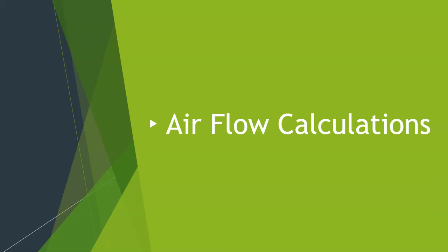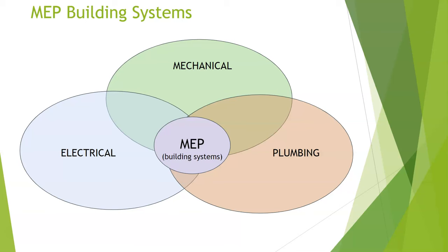In this video, we're going to discuss airflow calculations with regard to mechanical systems. Before we get into that, I want to explain what I mean by mechanical systems. With mechanical systems, I mean the ones found in building systems. Within building systems, there are three main disciplines: MEP systems, or mechanical, electrical, and plumbing systems.